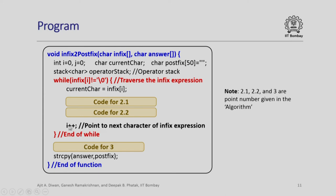After processing, i is incremented and the next character is examined. When the entire traversal is complete, another segment helps assemble the final output. Finally, since we have assembled the output in the postfix string, we copy that string to the answer parameter. Let us look at what is the code for segments 2.1, 2.2, and segment 3 in the subsequent slides. These correspond to point numbers given in our algorithm.